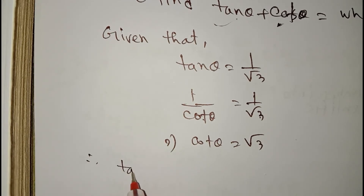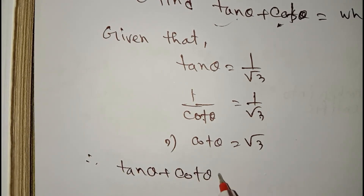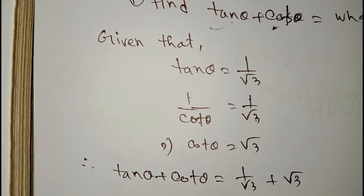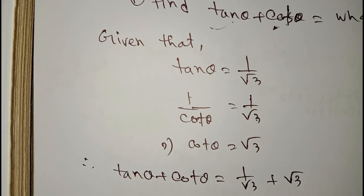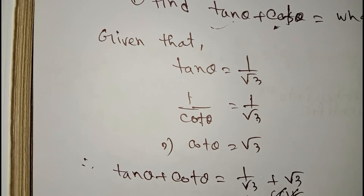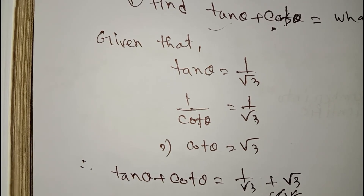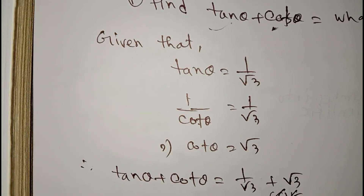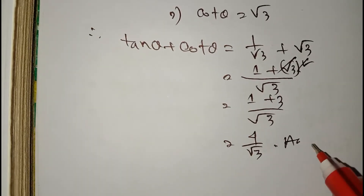So tan theta plus cot theta equals 1 by root 3 plus root 3. Taking LCM as root 3: 1 plus root 3 times root 3, that is 1 plus 3 equals 4, divided by root 3. So the answer is 4 by root 3.